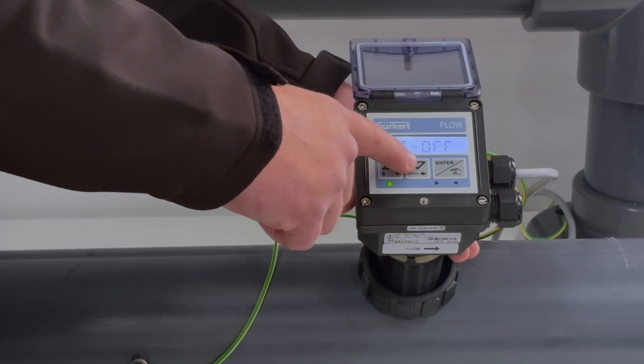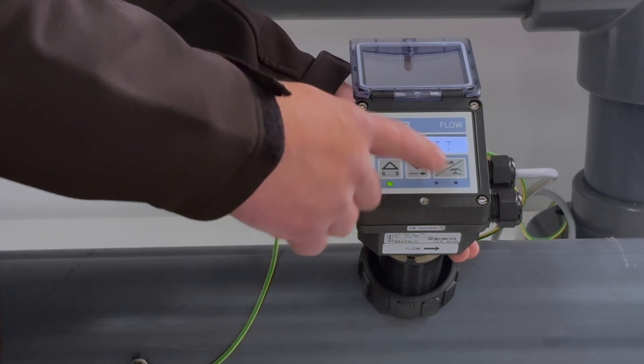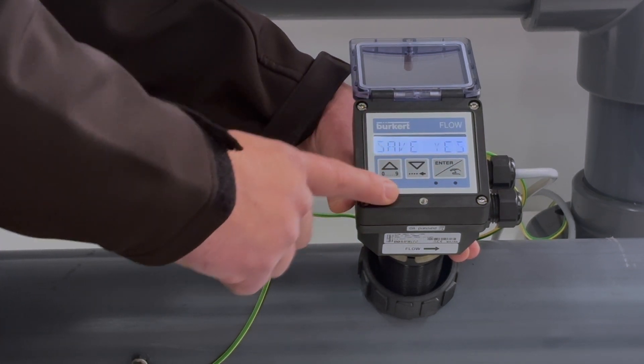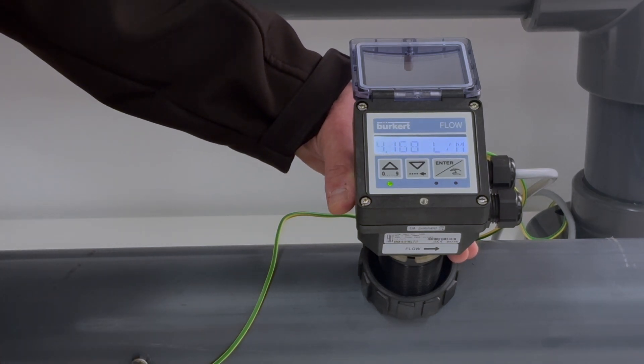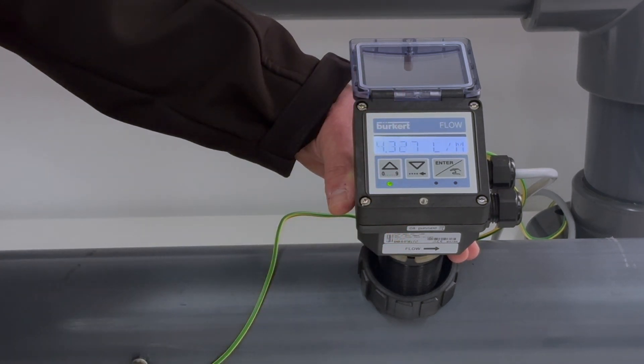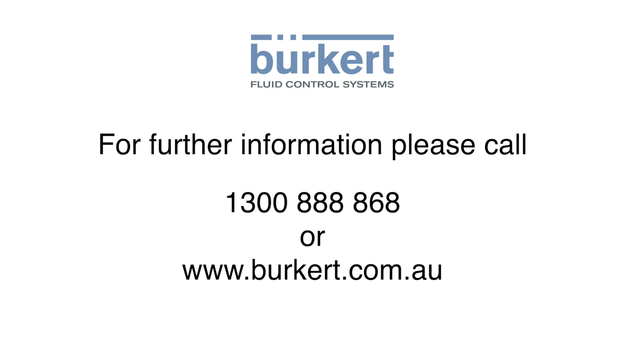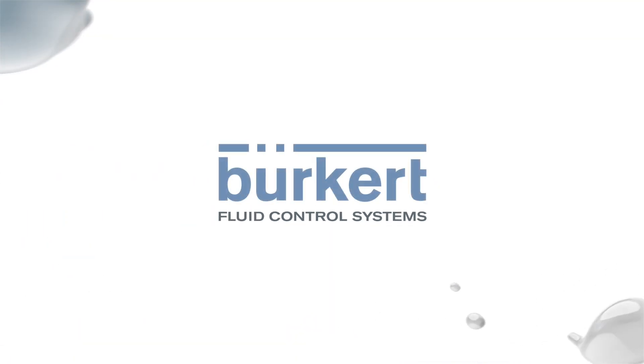I'm not going to worry about the cutoff option in this case. The backlight function is pretty self-explanatory. I can now end the menu, save it, and now I'm back to the operations menu and I've successfully set up the 8045 for operation. Thank you.